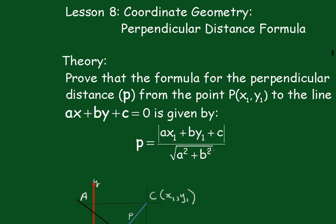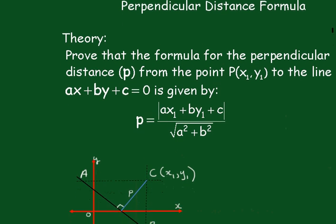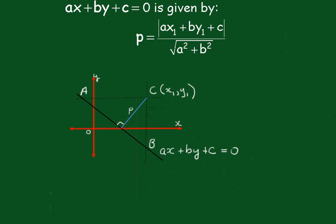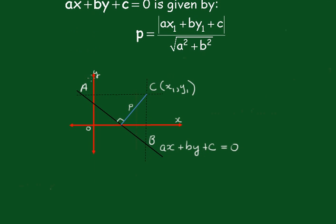There's a number of different variations of proof of this, some of which are quite long. Hopefully you'll find this one's a little bit shorter. What I've done, I've set up the axes here and on the point x1, y1, I've drawn the line forming a triangle ACB.